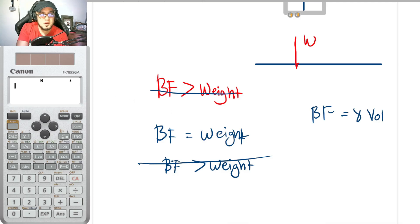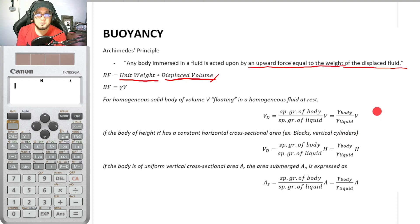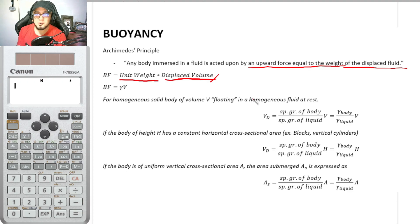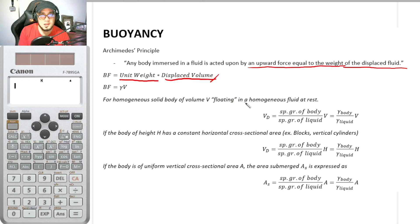There are also shortcut formulas to make solutions more systematic. These shortcuts help find the depth or volume of displaced liquid more quickly. The first formula is for a homogeneous solid body of volume V floating in a homogeneous fluid at rest.